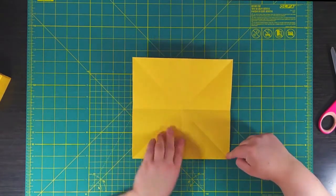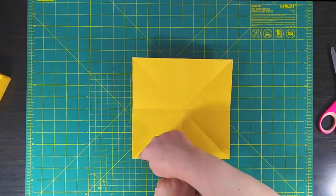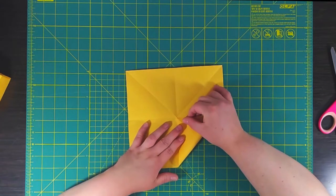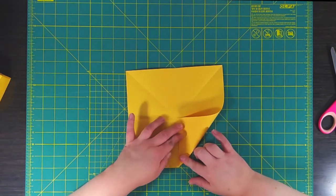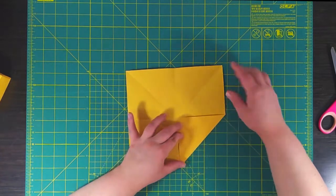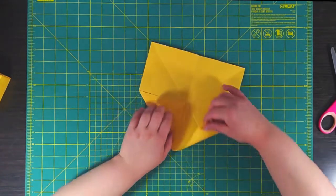Next thing we're going to do is fold in all four corners to the center point. And this step doesn't have to be absolutely perfect. Just get it as close as you can and make sure that your corners are nice and sharp and not overlapping each other.